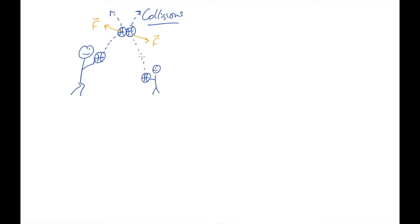So my son's basketball would have kept going this way, but it got a big push this way and so it went flying off. So individually, each of these basketballs had a large force on them that was changing the way they were moving. That's what I meant by saying the interaction force dominates the motion.